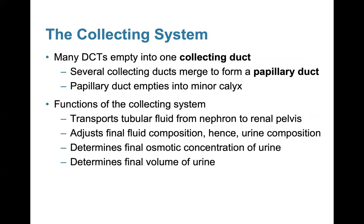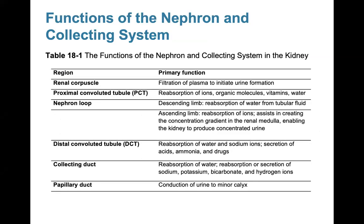In the collecting system, many distal convoluted tubules empty into one collecting duct, and several collecting ducts merge to form the papillary duct, which empties into the minor calyx. The functions of the collecting system include transporting tubular fluid from the nephron to the renal pelvis, adjusting final fluid composition and urine output, and determining the final osmotic concentration and volume of urine. This table summarizes the major structures of the nephron and collecting system and their functions.